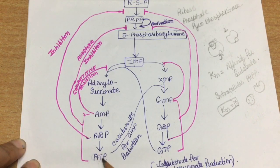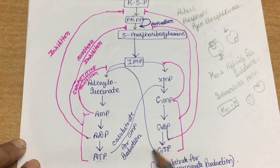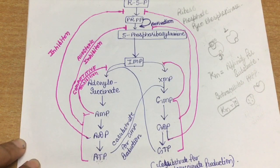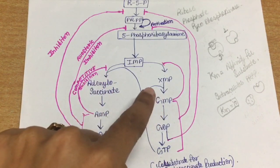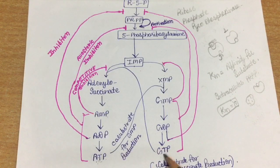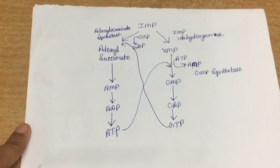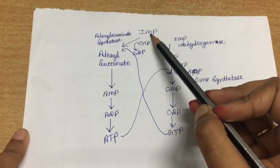GTP production is regulated based on the amount of ATP present, and ATP production is regulated based on the amount of GTP present. So we can say that the two end products of purine synthesis — ATP and GTP — are highly and tightly regulated. They cross-regulate each other to produce ATP and GTP in the required amounts.